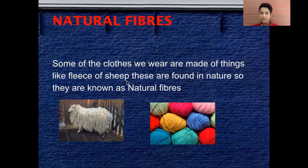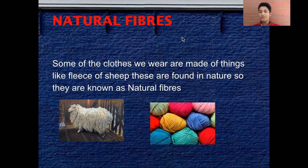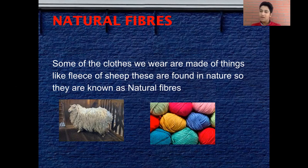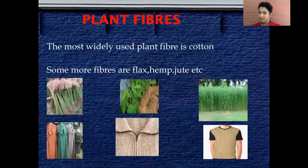The first thing we're going to be studying about is animal fibers. We all love to wear clothes — some are made up of chemical synthetic materials such as nylon, but some are made up of natural fibers. For example, woolen clothes are made from the fleece of sheep, found naturally, so they are known as natural fibers.